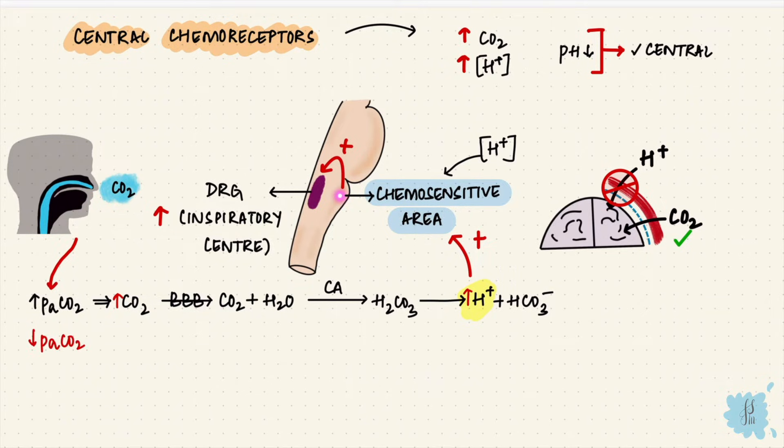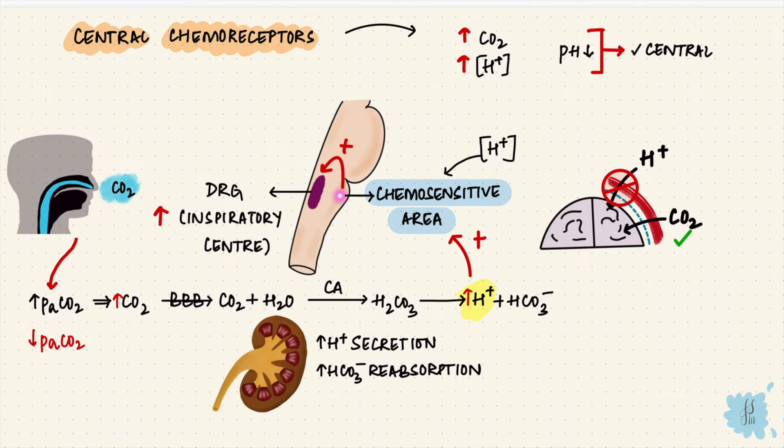This effect would last for a few days and then the kidneys would take over, throwing out the excess hydrogen ions by increasing their secretion and also increasing bicarb reabsorption, ultimately maintaining the pH of blood. So this is how central chemoreceptors work.